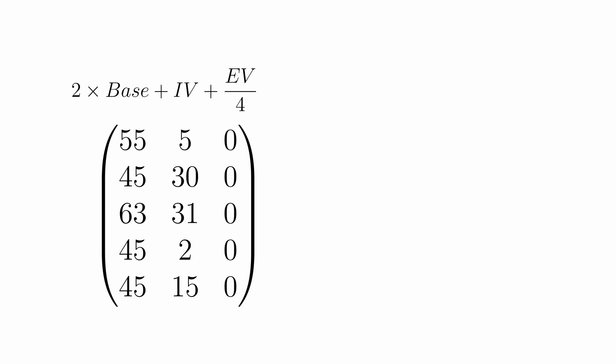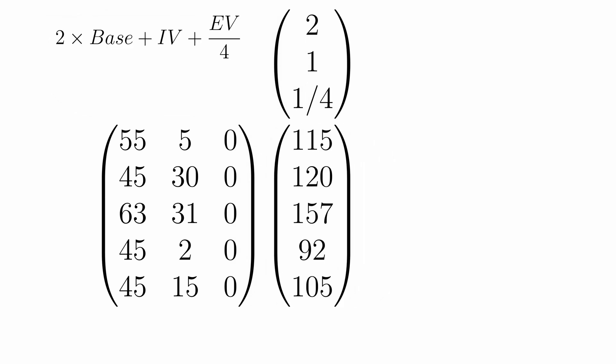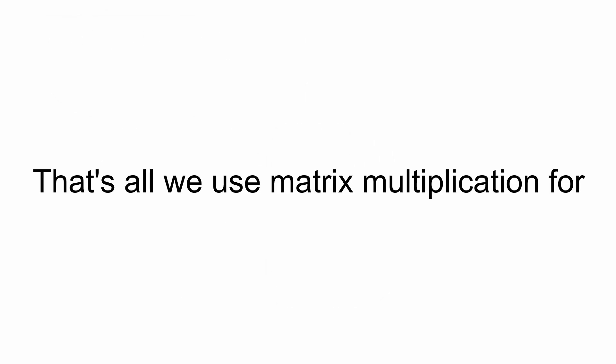What we can now do with these three stats is use matrix multiplication to help with this step in the process. If we put these three modifiers into a vector, we find that the result of matrix vector multiplication will send each row to the output 2 times the base stats plus IVs plus EVs divided by 4. And well, that's all there is to it.